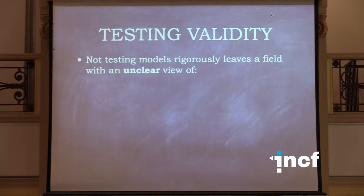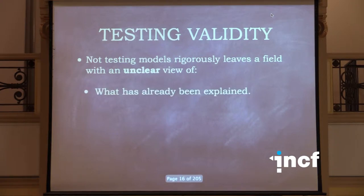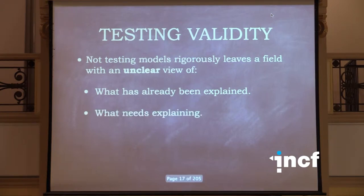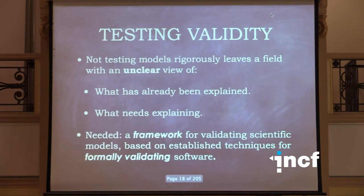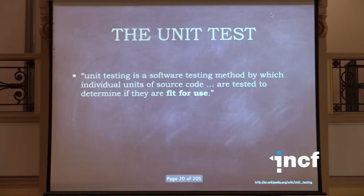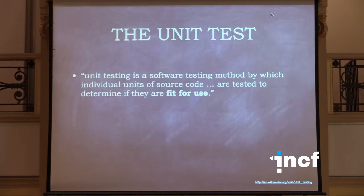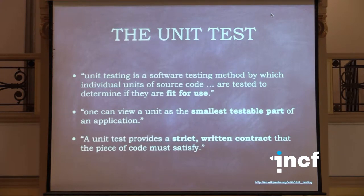If we don't figure this problem out, modelers will not know whether the phenomenon they're trying to model has already been explained by some other model, or what data sets need to be explained. We really need a framework for doing this formally. Software engineering already has a framework we can borrow called unit testing. A unit test is something you use to make sure a piece of code works and is fit for use — it's a strict and formal way of ensuring that if something passes a unit test, it really does what you say it does.